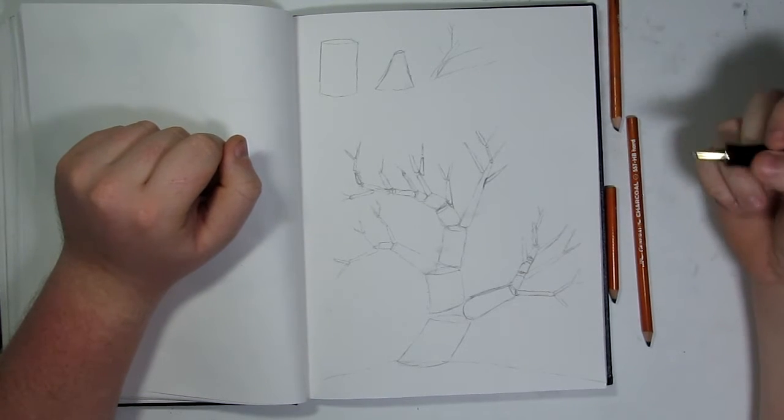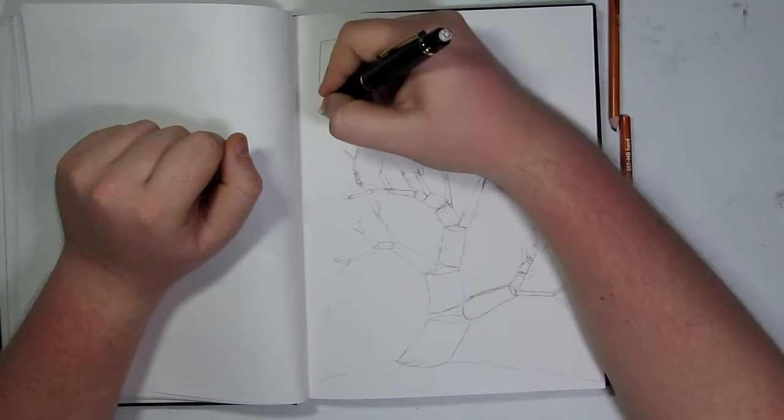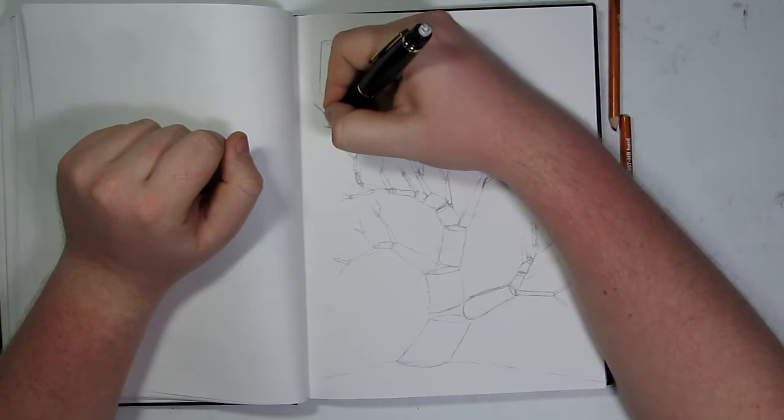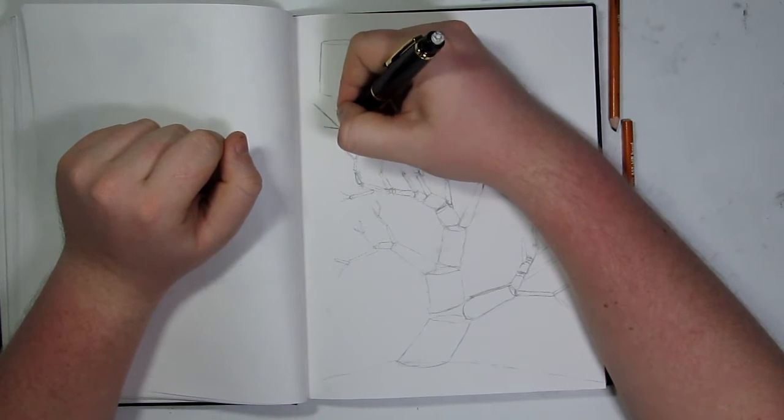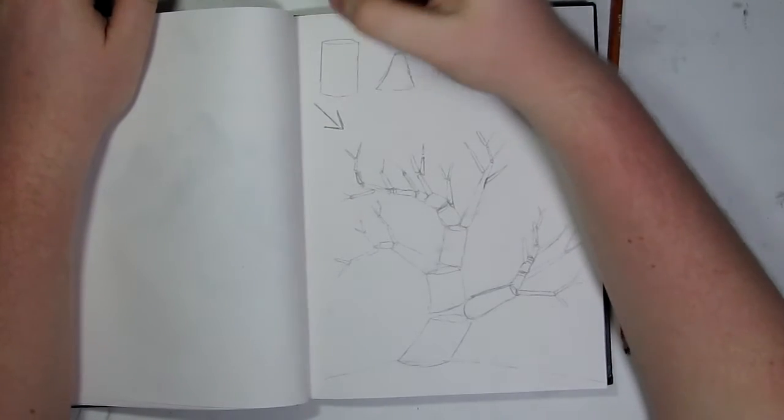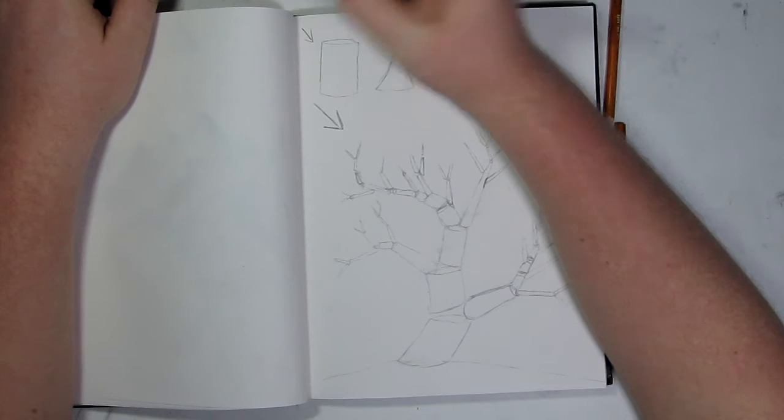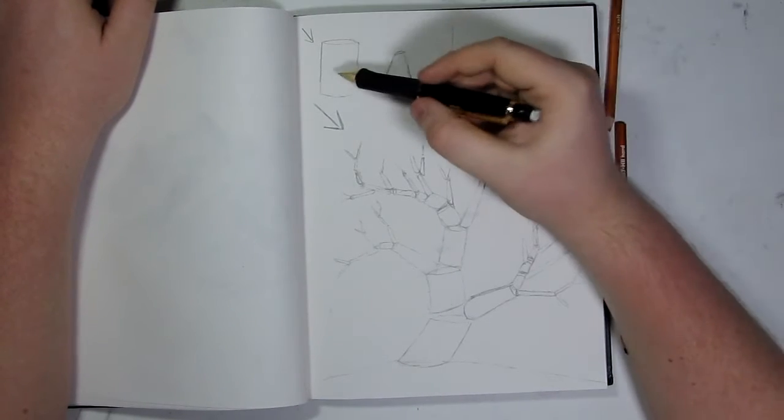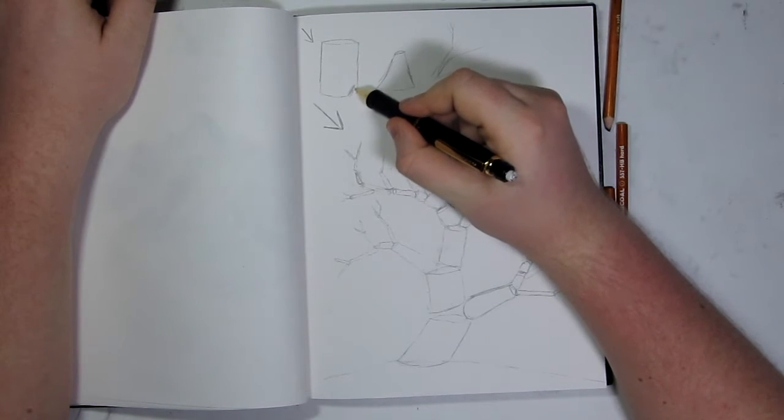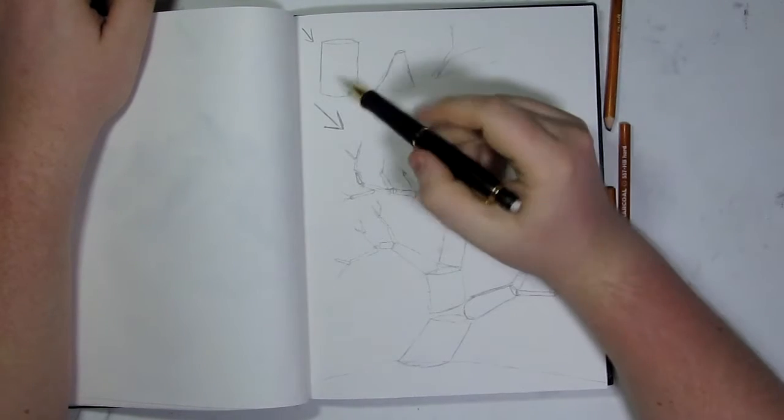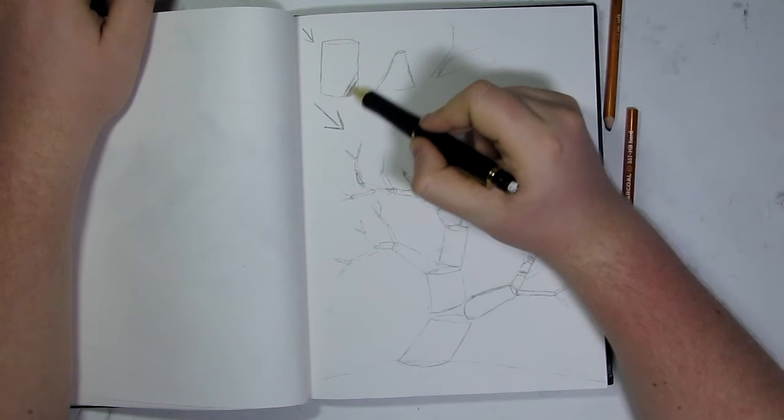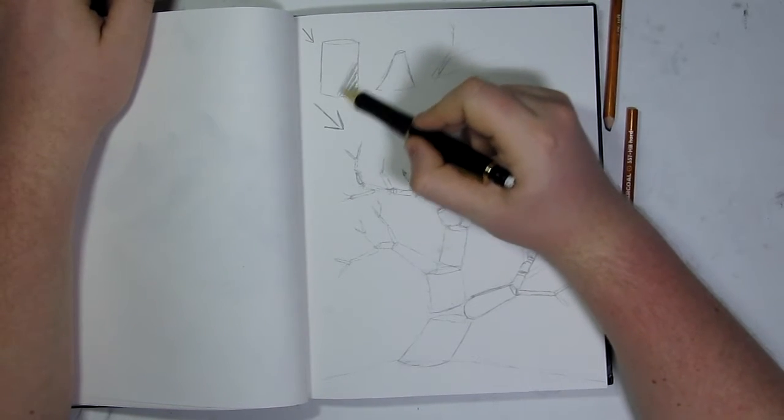Now for this we have to determine which way the light is going to be hitting the tree. I'm going to say that the light is coming in this direction here. With this cylinder that I've drawn, if the light is coming in this direction, that means that this portion here will be the darkest, and then as you get to the other side it's going to get very light.